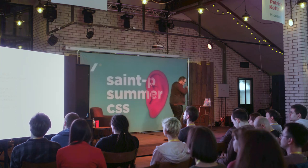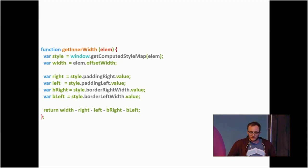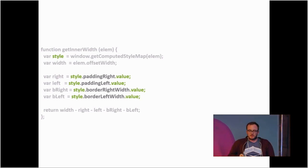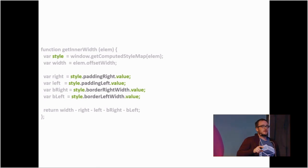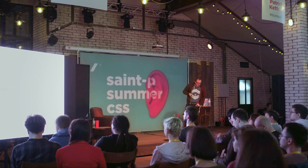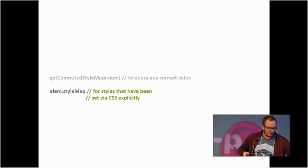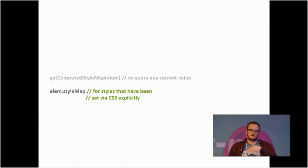What the CSSOM does is introduce new properties on getComputedStyleMap, and each element will also have a dot styleMap. Rather than having to do a parseInt, you can call dot value to get the actual integer value. So you no longer have to do this string parsing, making it much more performant. You have getComputedStyleMap which queries any current element, and each element also has a dot styleMap property.